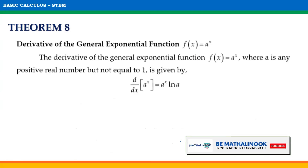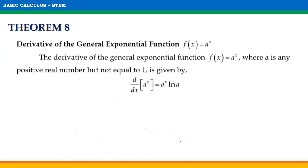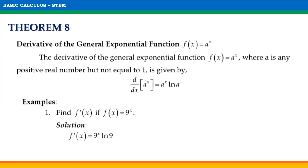Theorem number 8. The derivative of the general exponential function f of x equals a raised to x, where a is any positive real number but not equal to 1, is given by d over dx of a raised to x equals a raised to x ln a. For example, find f prime of x if f of x is equal to 9 raised to x. Notice that a is equal to 9. Hence, using this rule, the derivative of f of x is 9 raised to x times ln 9.